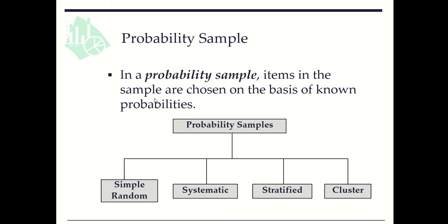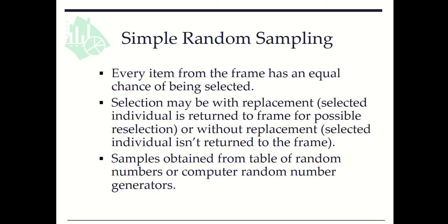In a probability sample, items in the sample are chosen on the basis of known probability. With simple random sampling, every item from the frame has an equal chance of being selected.